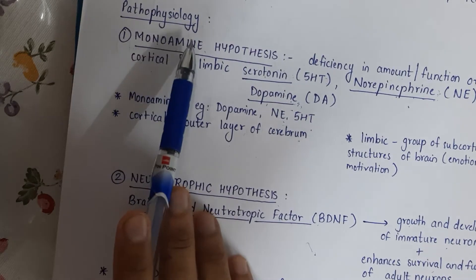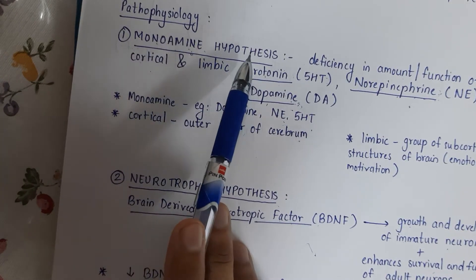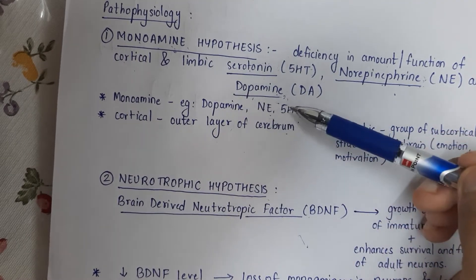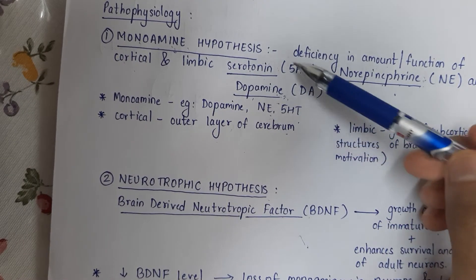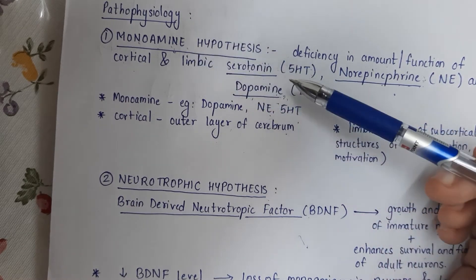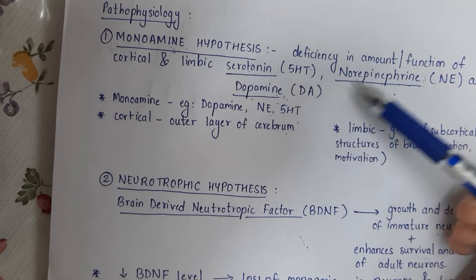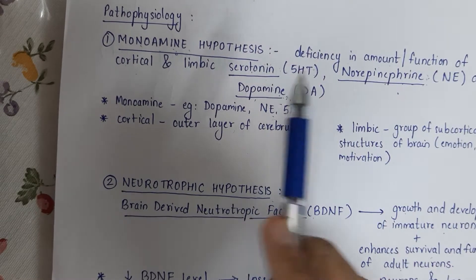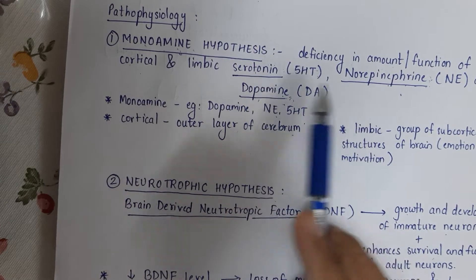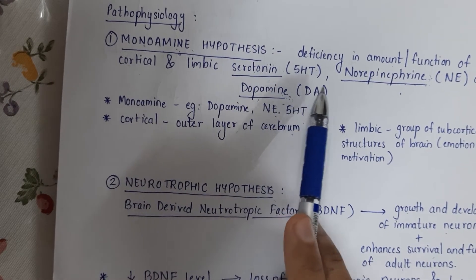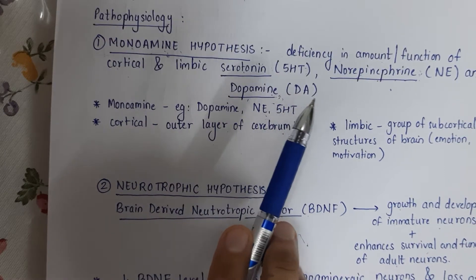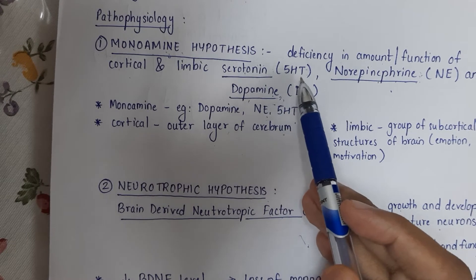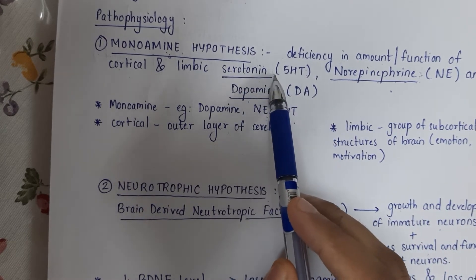These three are neurotransmitters but they are also monoamines. This is called the monoamine hypothesis because we will be discussing these three neurotransmitters. What happens to these monoamines is there is a decline — there is a deficiency. Serotonin is released in times of happiness; when the person is feeling happy, this neurotransmitter is released.